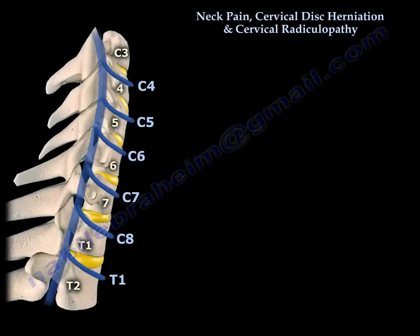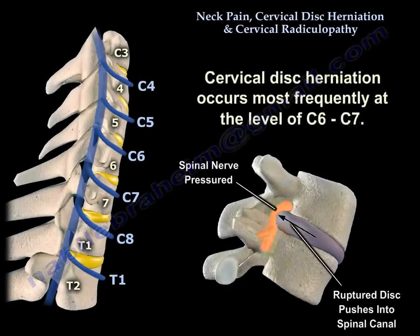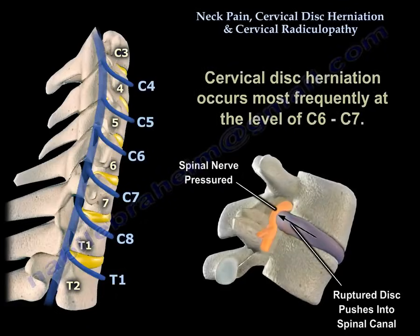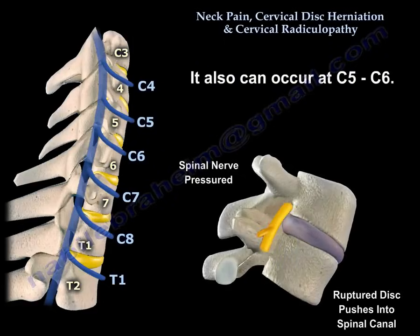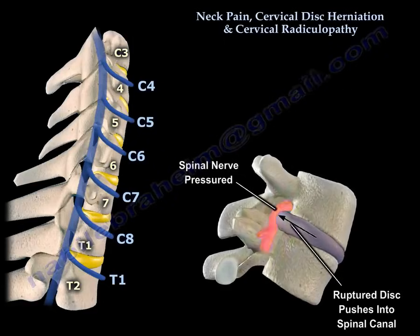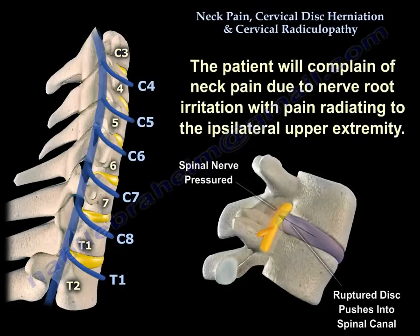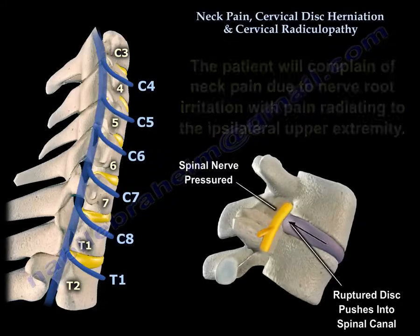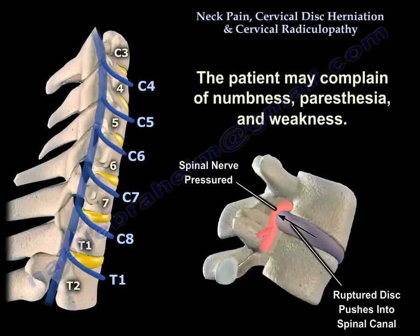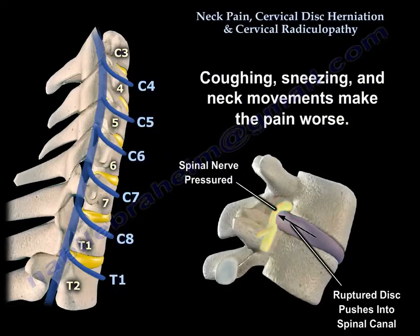Neck pain, cervical disc herniation, and cervical radiculopathy. Cervical disc herniation occurs most frequently at C6-C7, and it can also occur at C5-C6. The patient will complain of neck pain due to nerve root irritation, with pain radiating to the ipsilateral upper extremity. The patient may complain of numbness, paresthesia, and weakness. Coughing, sneezing, and neck movements make the pain worse.